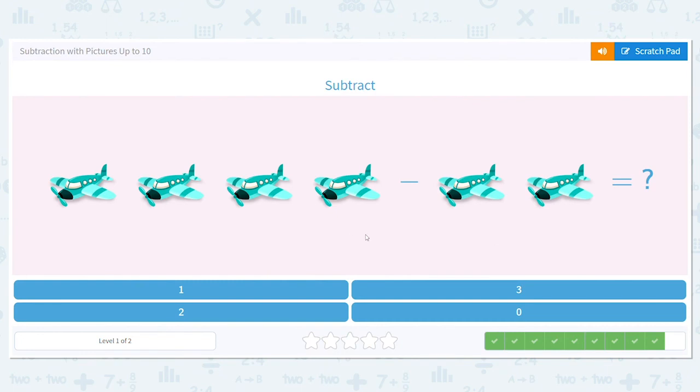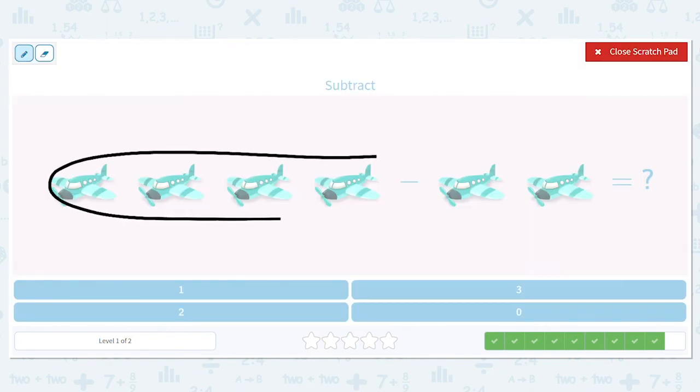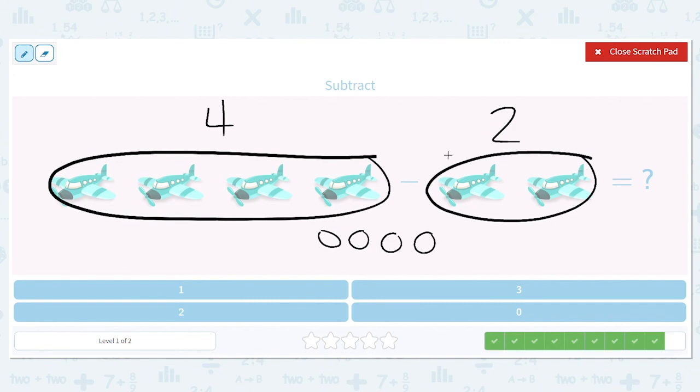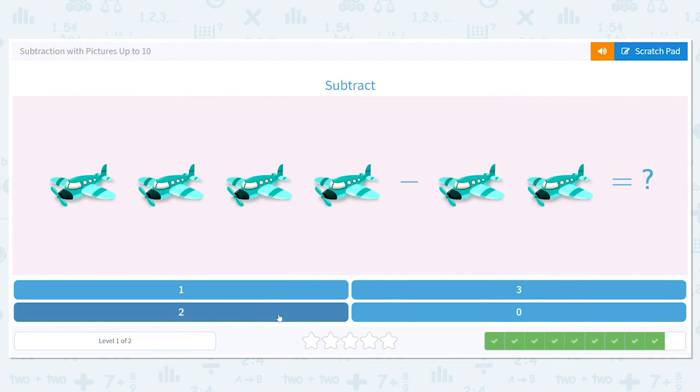Let's try one more. We have airplanes. How many are in our first group? One, two, three, four. How many are in our second group? One, two. So let's subtract. What is four minus two? Draw a picture if you're stuck or if you need help. Four and I'm going to take away two. And what is left? So four minus two is two.